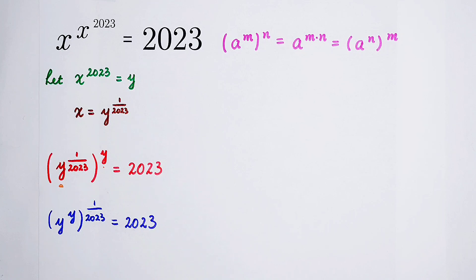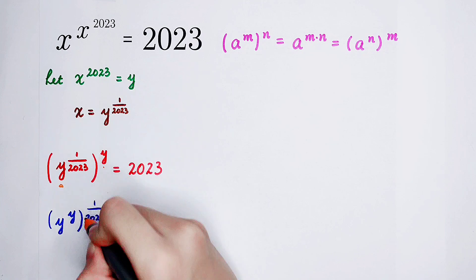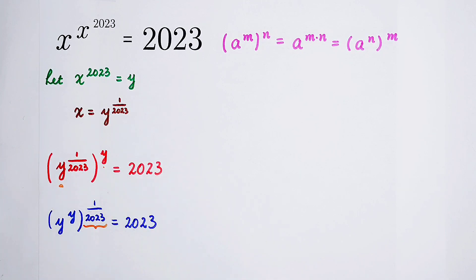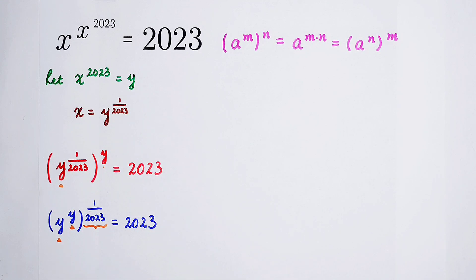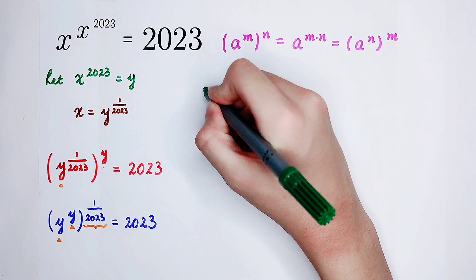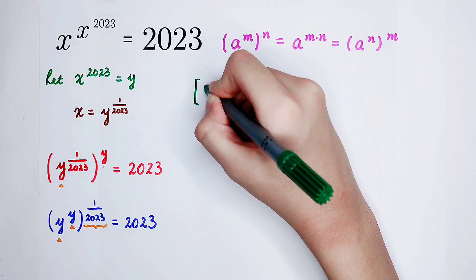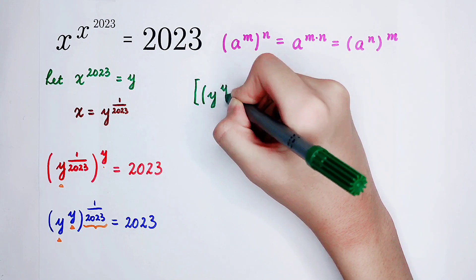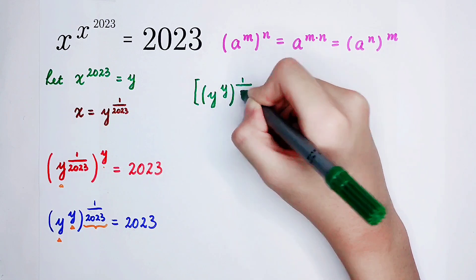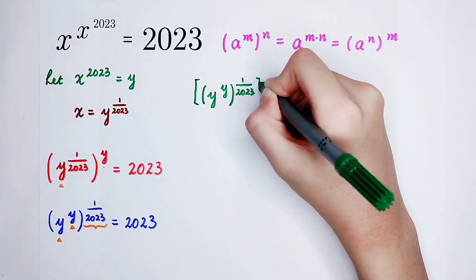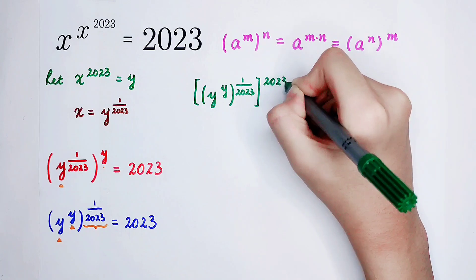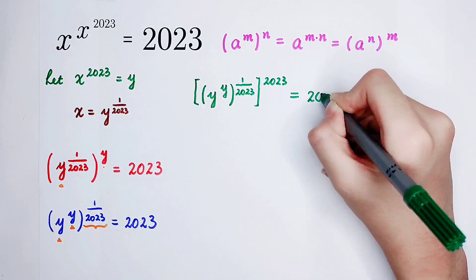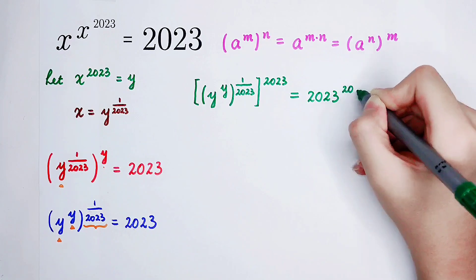Now we have a problem — a huge problem. This exponent is too complex to solve directly. The base is y to the power of y. Our only way is to raise both sides to the power of 2023. For the left-hand side, it's going to be y to the power of y, all to the power of 1 divided by 2023, and then also to the power of 2023. The right-hand side is 2023 to the power of 2023.